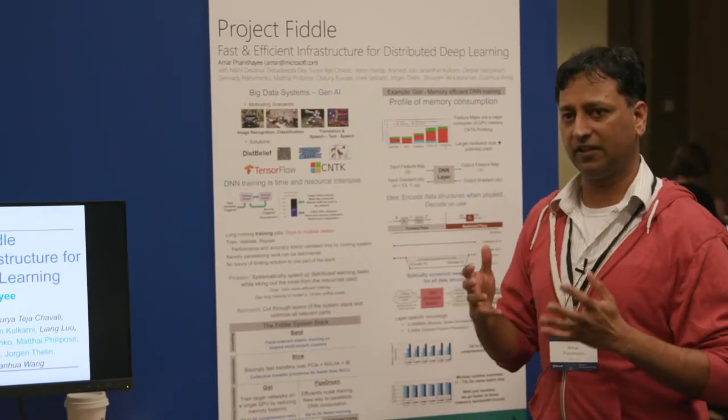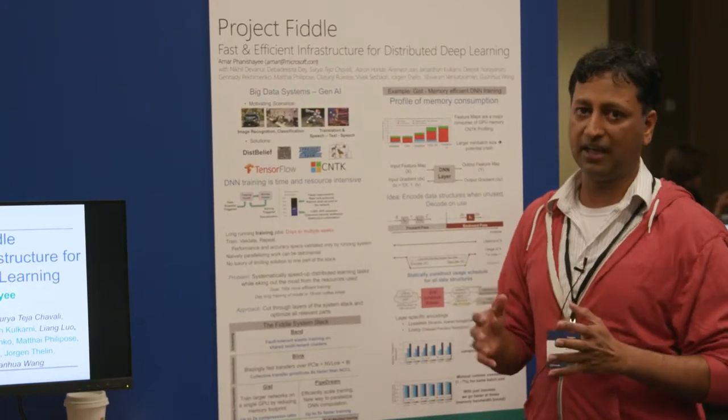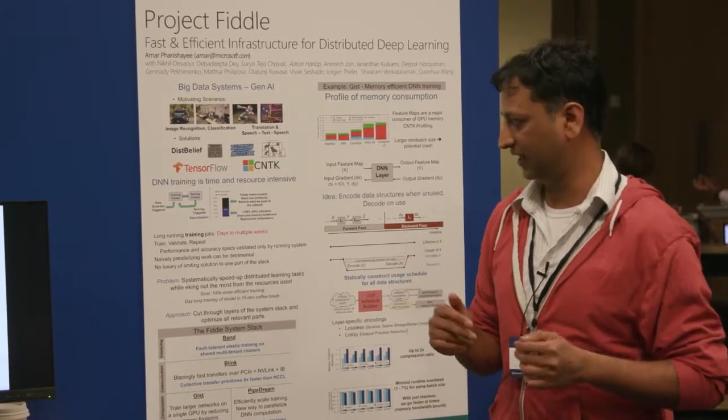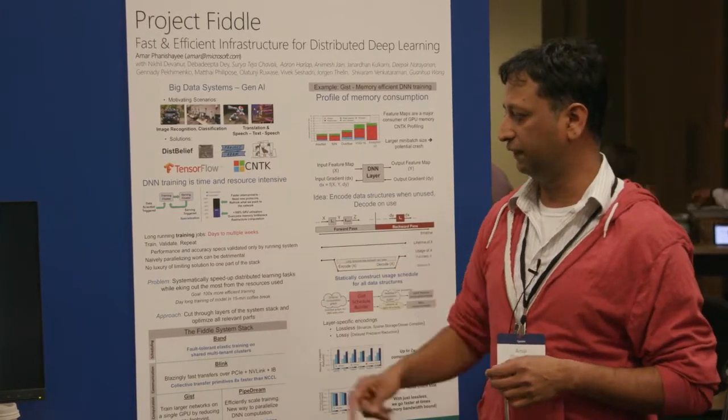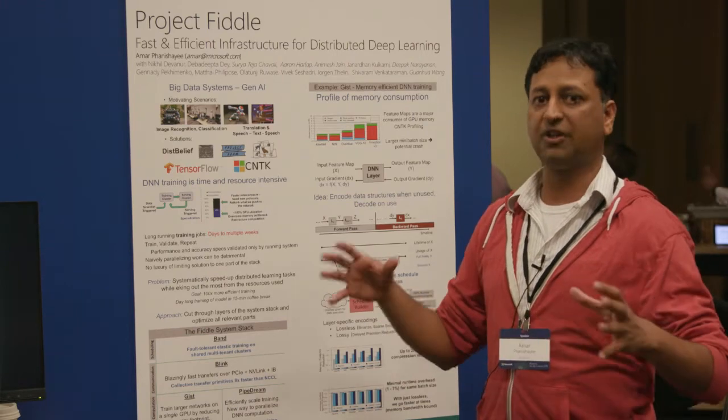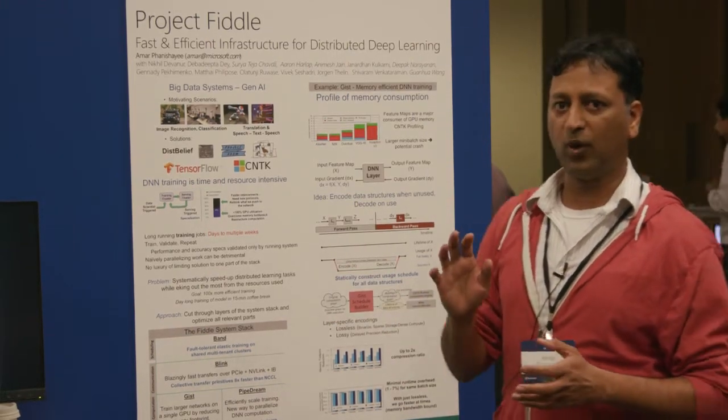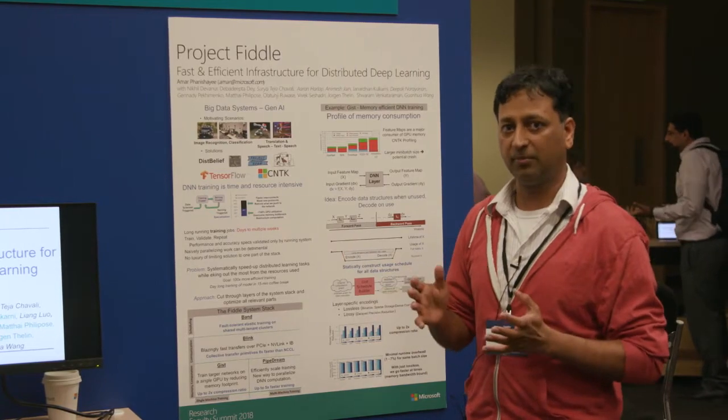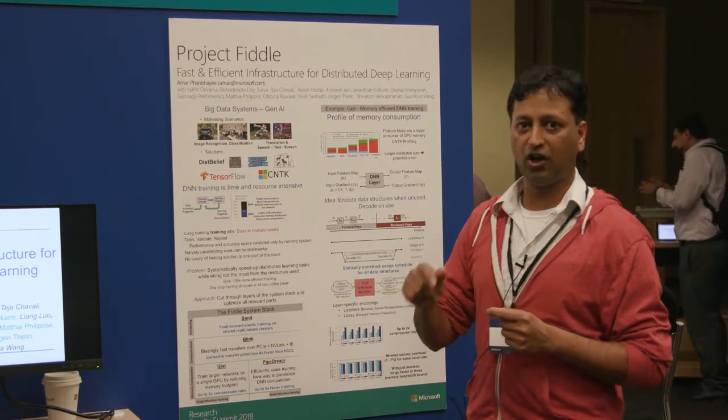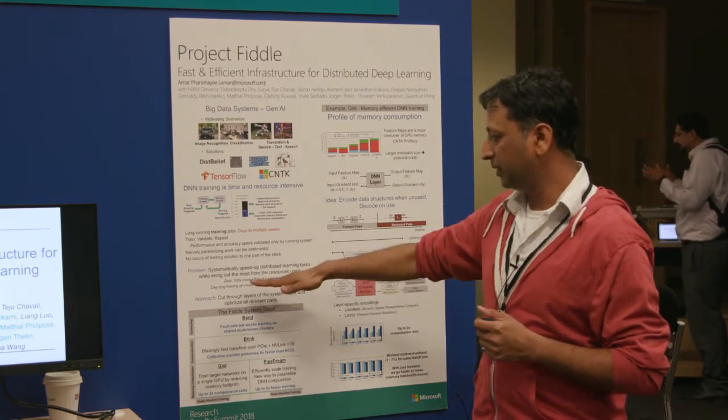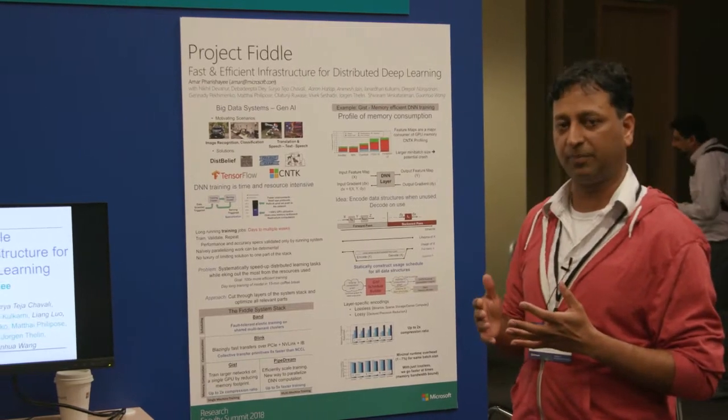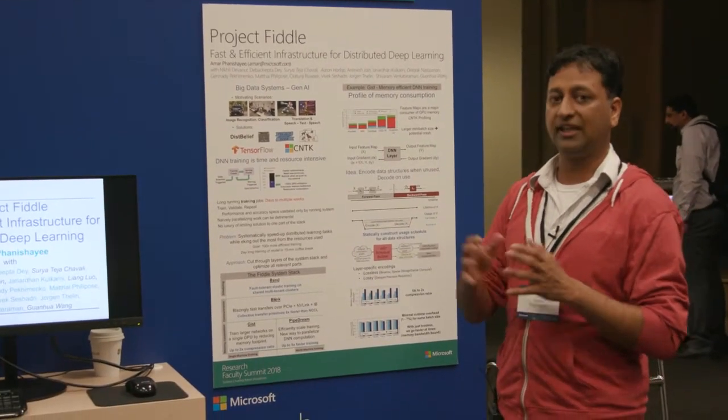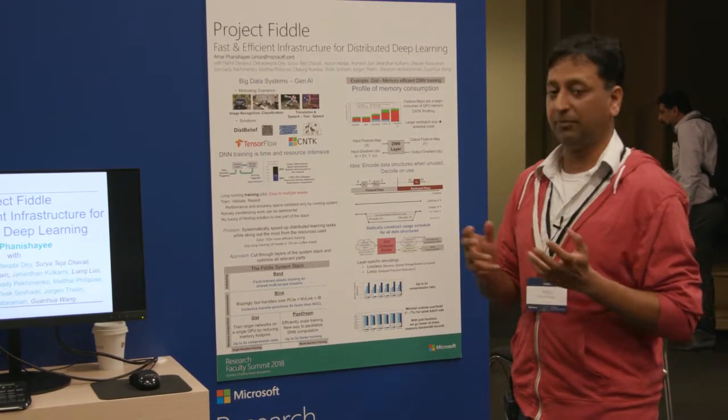But the key factor that still remains is DNN training is extremely time and resource consuming. Jobs, training jobs, last days to multiple weeks at times. And there's this constant cycle of train, validate, repeat, which blows up the training time effectively. One of the most important things in this work is naively parallelizing this work can actually be detrimental, because what really matters at the end of the day is the quality of work or time to reach a certain accuracy. The problem we're trying to solve here, we've set an ambitious goal for ourselves. We'd like to perform 100x more efficient training. Intuitively what this means is if you have a model that takes an entire day to train, we'd like to train this model in 15 minutes over your coffee break.